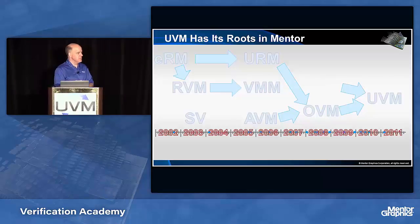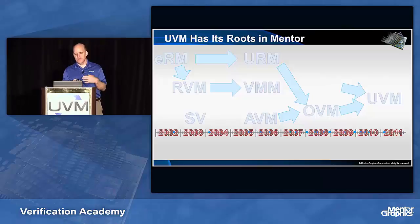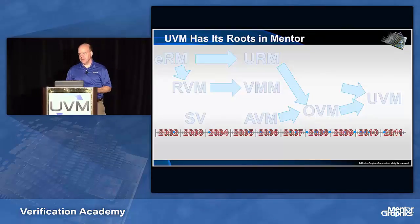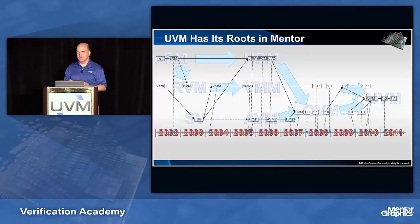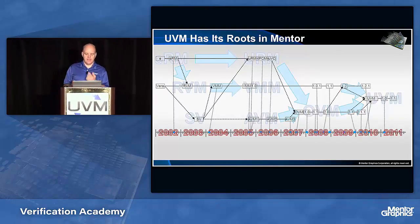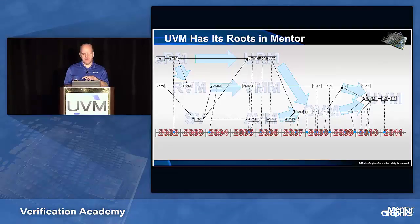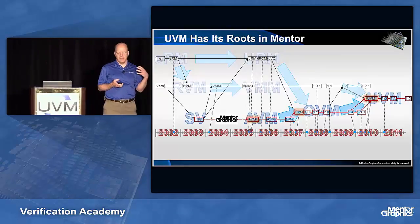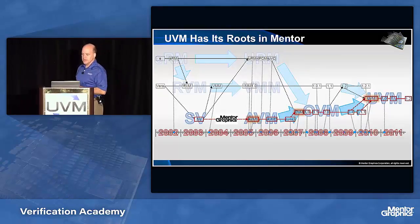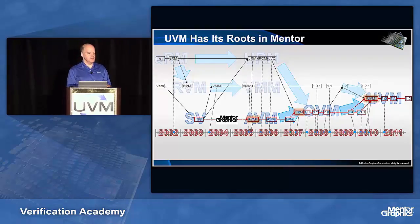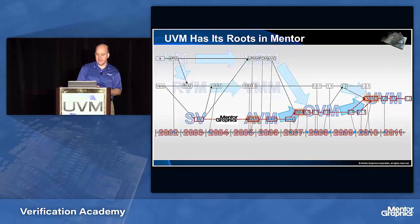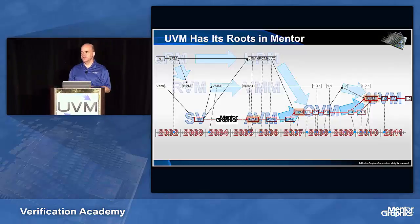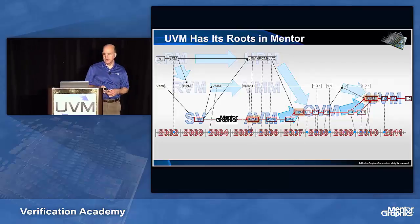UVM has actually had its roots in a number of things, starting way back with things like ERM and RVM. It really came about through SystemVerilog. From SystemVerilog, we developed AVM. VMM was also kind of SystemVerilog as well. Then we combined AVM with URM from Cadence, did OVM, and then pulled in VMM to make UVM. As you can see, Mentor Graphics has been an integral part of this entire flow all the way up to UVM, starting with SystemVerilog. Mentor was probably the leading implementer of SystemVerilog when it first came out, and AVM was really the first SystemVerilog-specific verification methodology, then we grew into OVM and UVM.